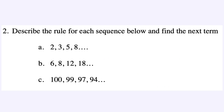Question 2 uses the same concept but gets your brain thinking a bit more, because the pattern might not be directly obvious. For Q2A, we have 2, 3, 5, 8. From 2 to 3 add 1, from 3 to 5 add 2, from 5 to 8 add 3. Notice: 2 plus 3 is 5, and 3 plus 5 is 8 — we're adding the previous term each time. So the next term is 5 plus 8, which gives us 13.